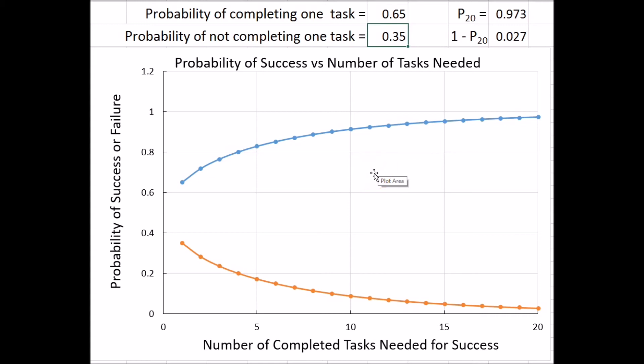0.65 is 0.15 percentage points higher than 0.5. So this is maybe not a realistic model for success, but I think it does show you that by improving your probability of success at a given thing, over the long haul it can have a rather dramatic effect on your success in life.